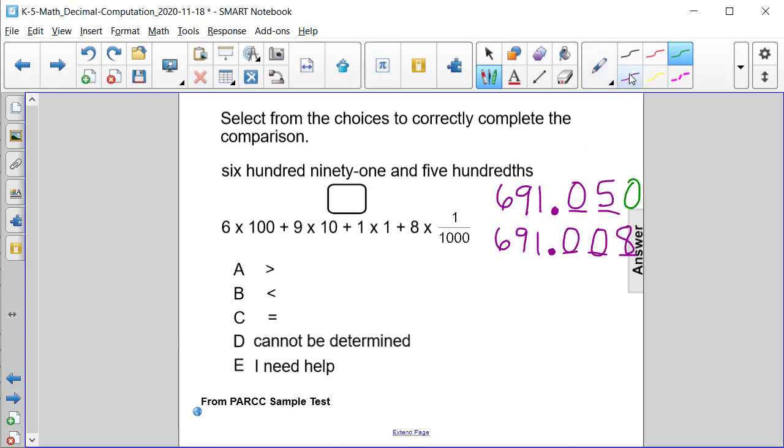Now let's compare each digit one by one, column by column. We have 600 in both, so so far they're equal. We have 90 in both. We have 1 in both. We have the decimal point in both. We have 0 tenths in both.